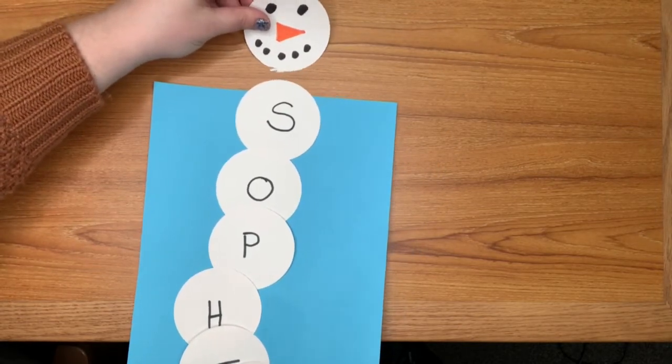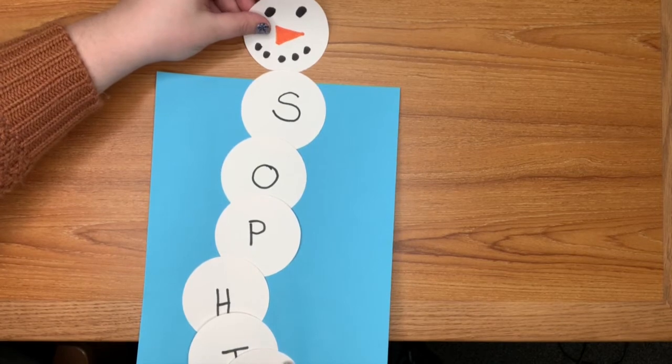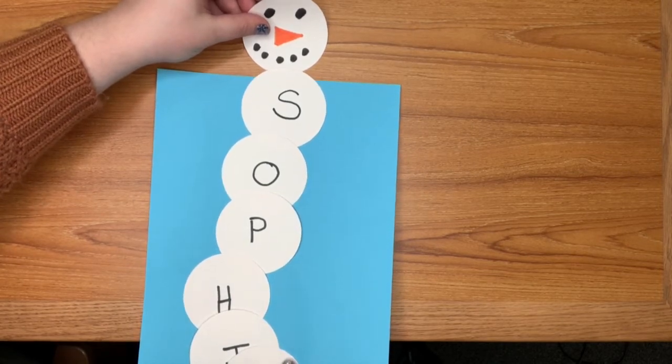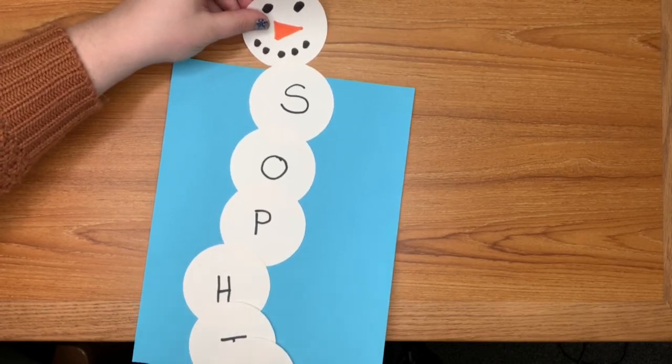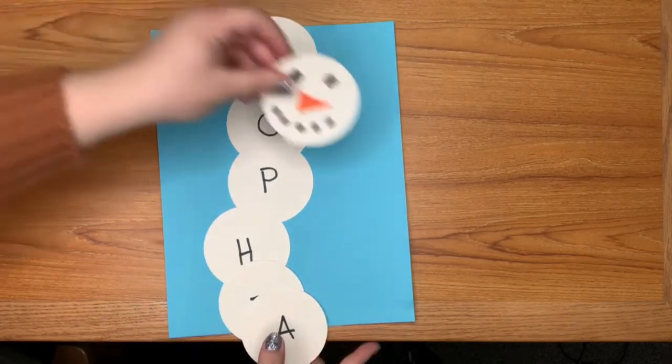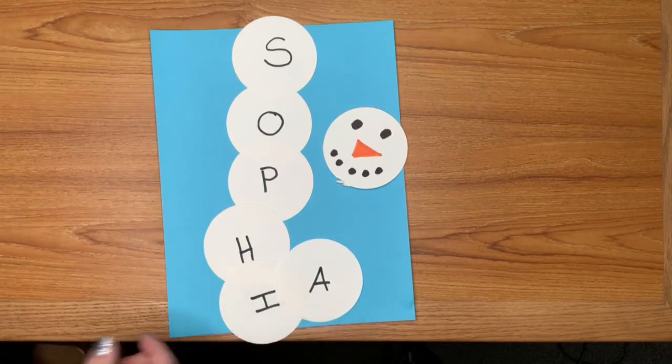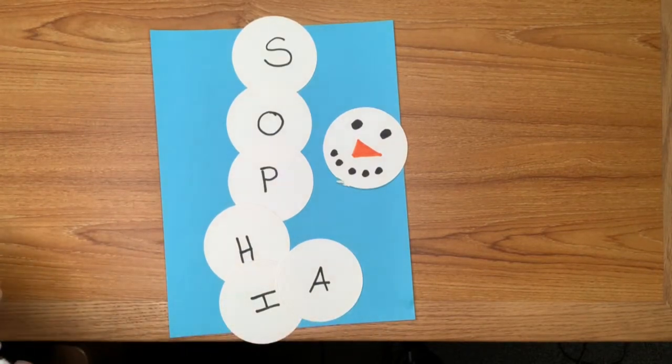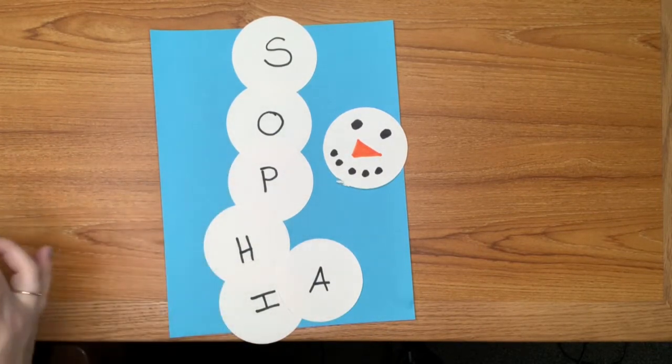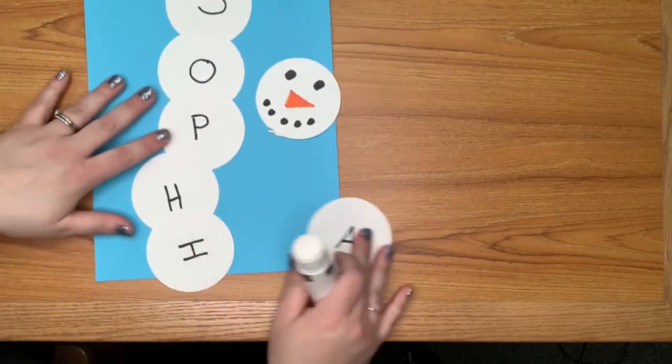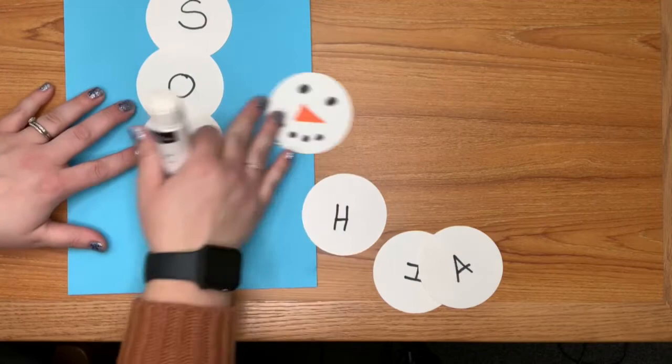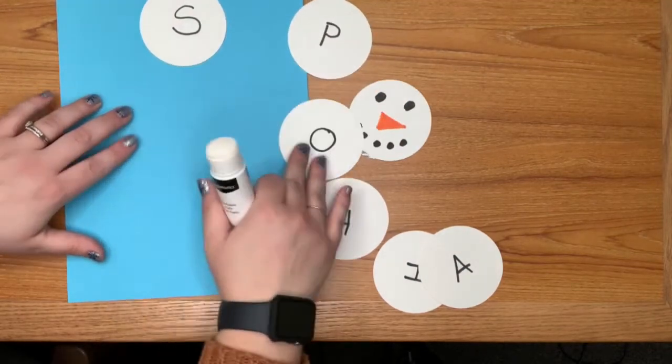He might be kind of going over the top of the piece of paper but that is all right. He's an extra long snowman because I have a longer name. I'm going to use stick glue today but you don't have to. You can use whatever glue that works best for you but this will not be too messy. So all right, let's get started.